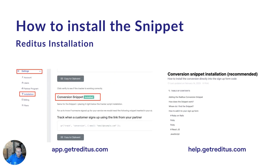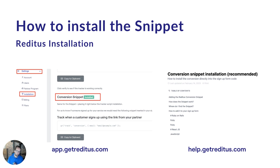How to install the conversion snippet: as shown on screen, it's basically one line of code. You can grab it from your app, and we also provide examples on help.getreadytest.com where you can see exactly how to implement it in different code languages.